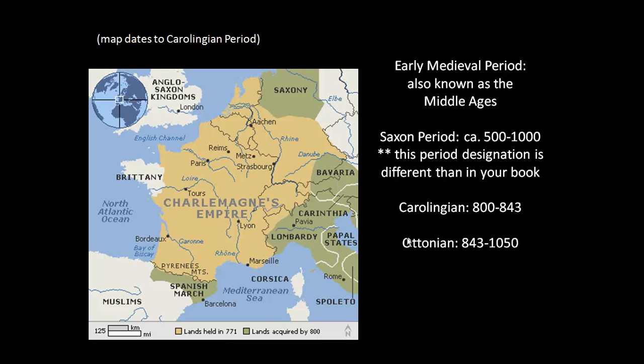In this online lecture, the excitement continues as we are still in the early medieval period, but we now are moving on to the Carolingian period. The previous lecture looked at the artwork produced in the Saxon period, and we noted that in that period the art is characterized as being primarily small scale, and found primarily in churches as well as burial sites.